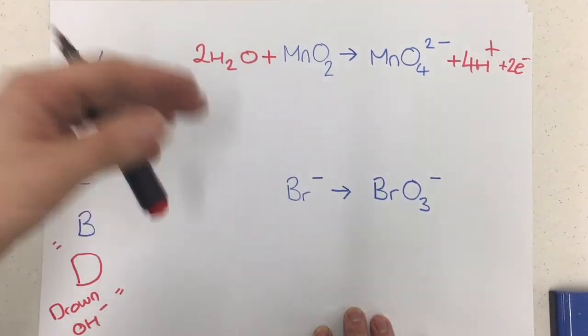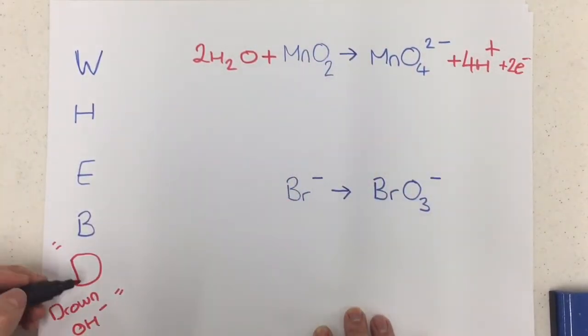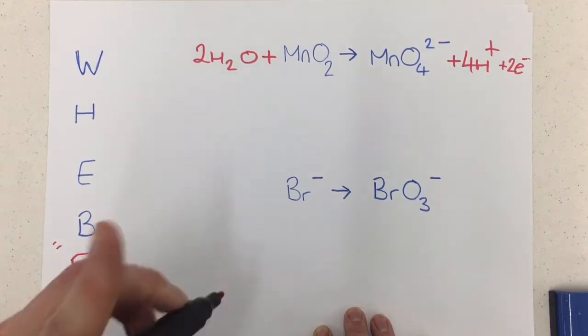But in the exam, let's say it said alkali conditions. Well, you would do this, but then, as I said a moment ago, you get to drown over here, so it's add enough hydroxide to each side to neutralize the H+ and then cancel down the waters. So here's what we're going to do.